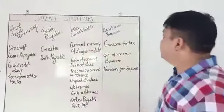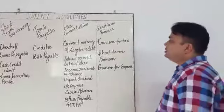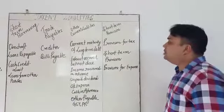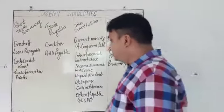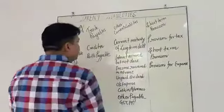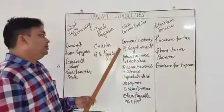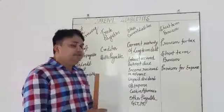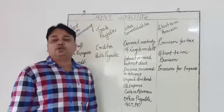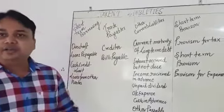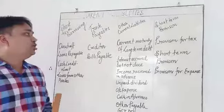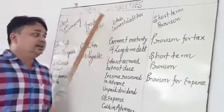Next is other current liabilities. This is very important. You have to remember many points. First is current maturity of long-term debt. What does this mean? If the long-term debt is going to be completed within this accounting year, it comes under other current liabilities.